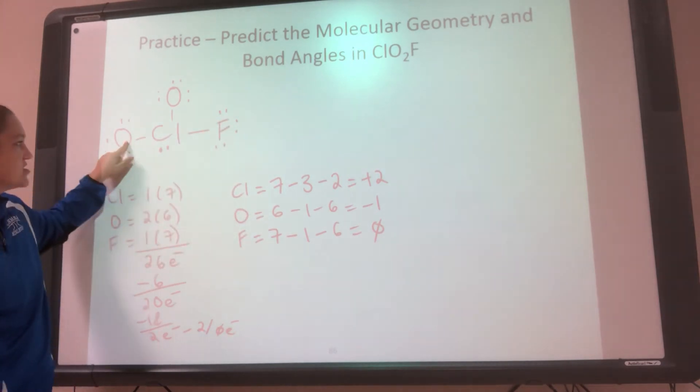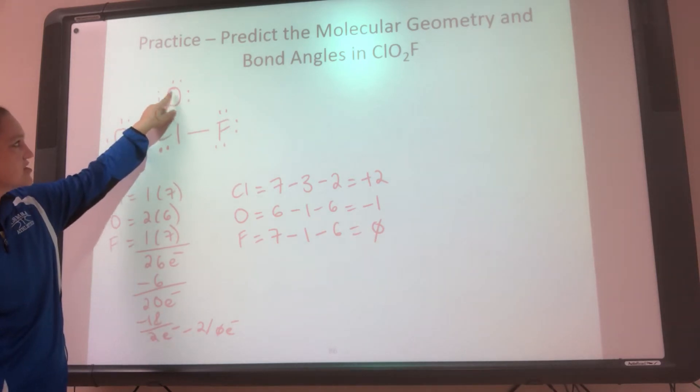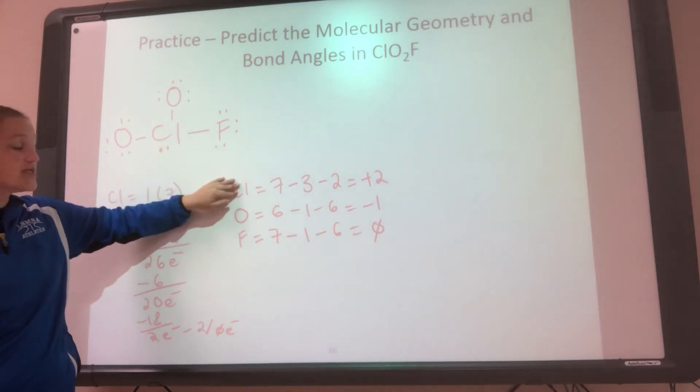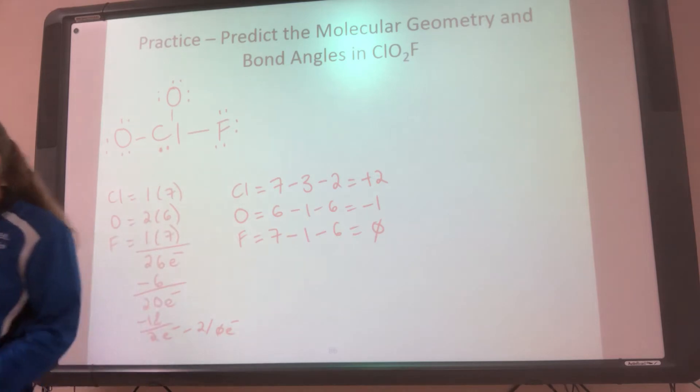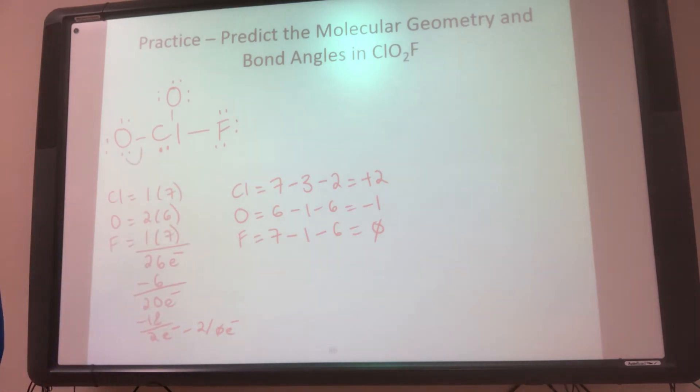This oxygen says, I can make 1 double bond. This oxygen says, I can make 1 double bond. Chlorine says, I want 2. So they're like, let's do it. So we'll make 1 double bond, 1 double bond. So we'll get a double bond here. Here, he's by himself.